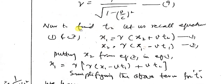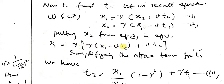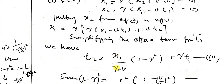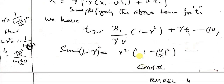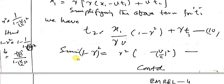Now to find the time t2, let us recall equations 1 and 2: x1 equals this expression, x2 equals this expression. Putting the value of x2 from equation 2 into equation 1 and rearranging, we find t2 equals x1 over (gamma·v) times (1 minus gamma squared) plus gamma·t1 — equation 10. Now 1 minus gamma squared equals gamma squared times (minus v/c whole squared), since gamma squared equals 1 over (1 minus v/c whole squared).